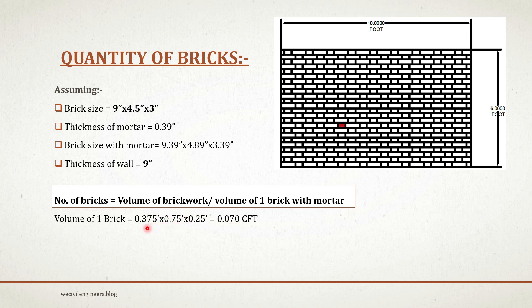0.375 is nothing but 4.5 inches divided by 12, because 1 foot equals 12 inches. So 9 inches divided by 12 equals 0.75 feet, and 3 divided by 12 equals 0.25 feet.